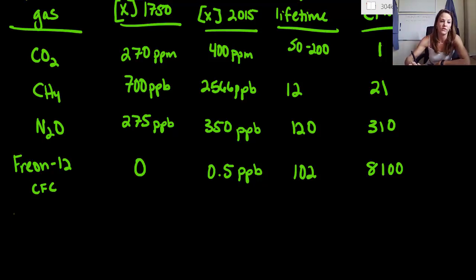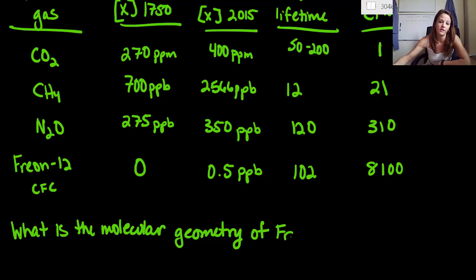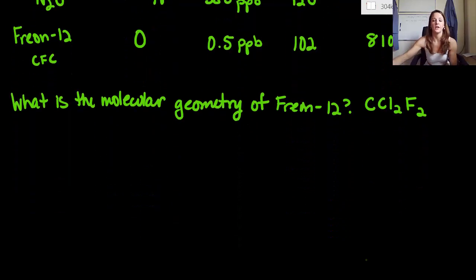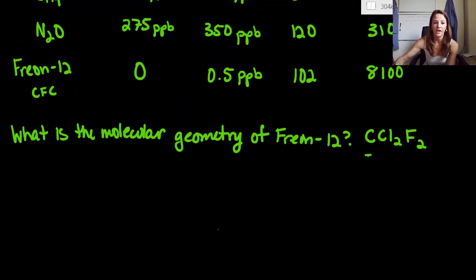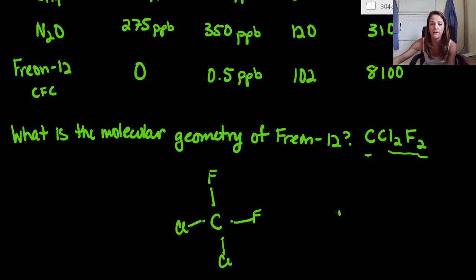Let's review Freon-12. What is the molecular geometry of Freon-12? The formula is CCl2F2. Carbon always wants to be in the center, so we have carbon in the middle. Then we have four valence electrons on carbon. We take the four other atoms and draw them around there. This one has the fluorines next to each other in the cis position, and the chlorines are next to each other. We draw these together, and then we can redraw our molecule. Essentially, this looks like a tetrahedral. It is tetrahedral.